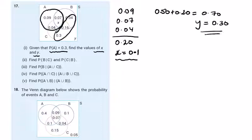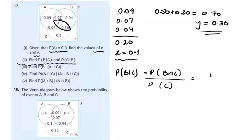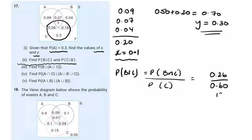So y is not 0.30 — that's x. Now for the conditionals: P(B|C) and P(C|B). For P(B|C), always write out what it is: it's the probability of B intersection C over the probability of C. B intersection C is 0.26, and the probability of C — what's in that circle — is 4 and 16 is 20, and x was 10, that's 30 and 3 is 60, so 0.26 over 0.60, which is 13 over 30.